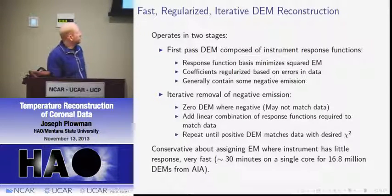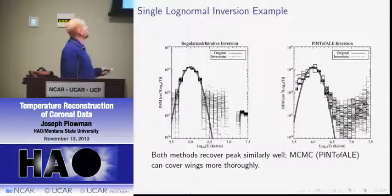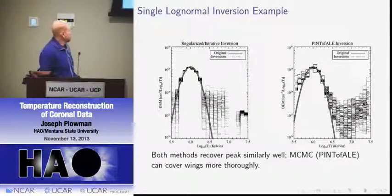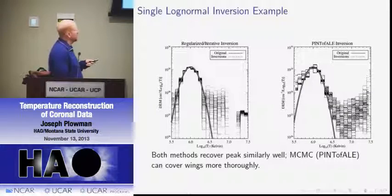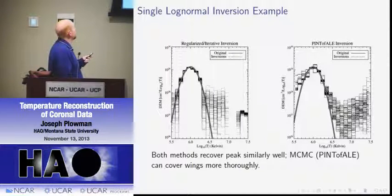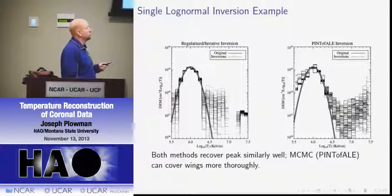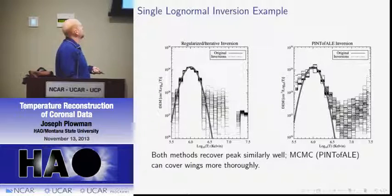I'm going to show a few results from the inversion. The first is a simple log-normal distribution. On the left are the results from our inversion, and on the right are results from the standard Markov Chain Monte Carlo code. Both recover the peak similarly well, though the MCMC does a little better at the tails. This is a place where the instrument doesn't have a lot of discriminating power. The MCMC does a little better in this case, but it's much slower — taking on the order of seconds to a minute, whereas our method takes around a millisecond.